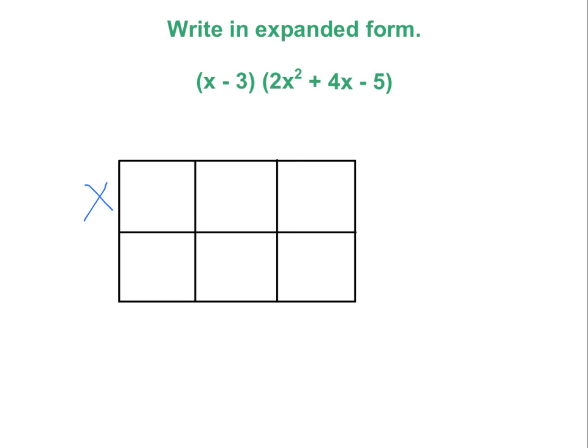On this side we can put the binomial, so there are two different boxes going down, and then across the top there are going to be three for the polynomial. So I write each of my numbers above each of the boxes,